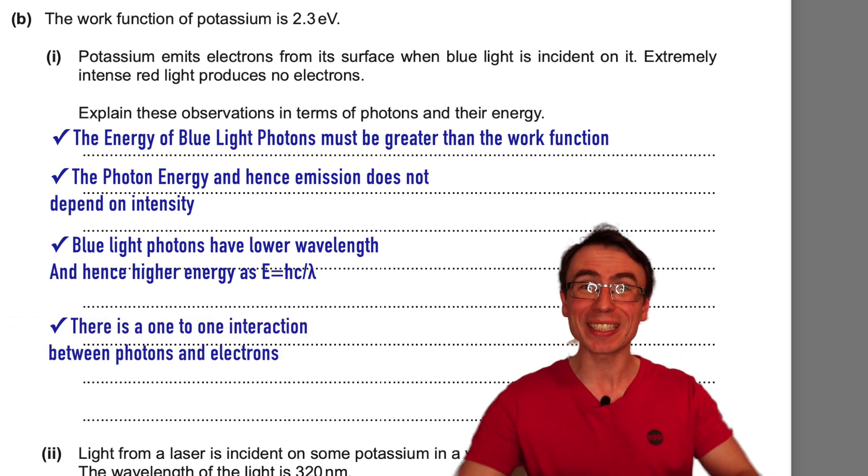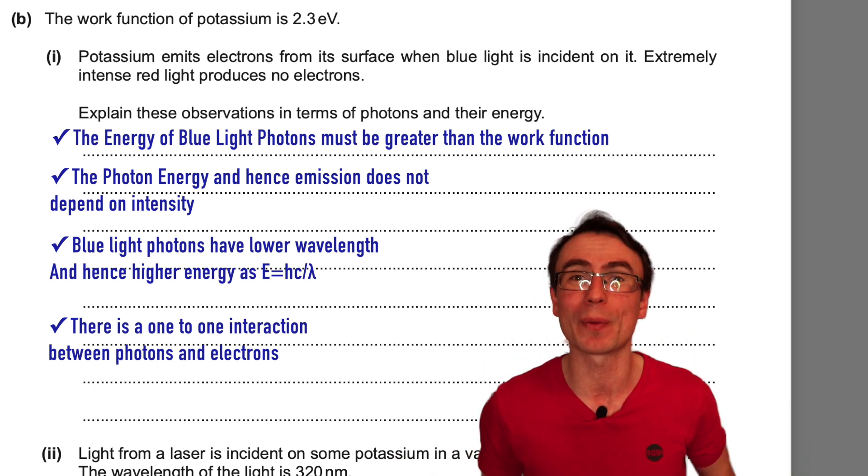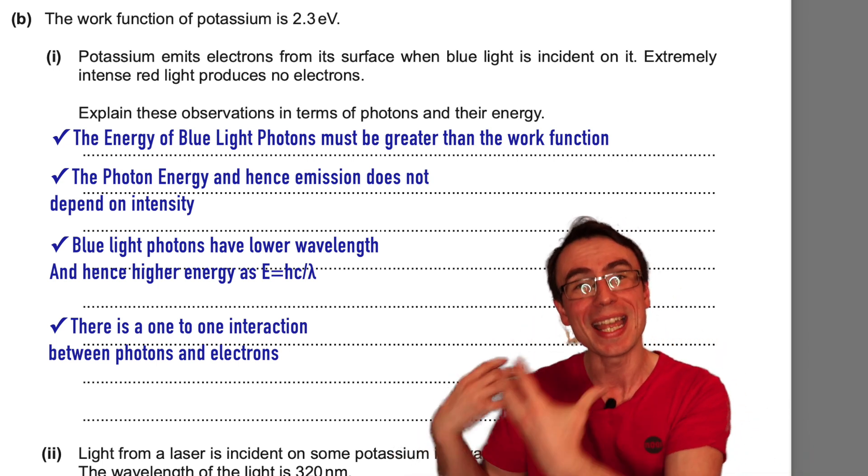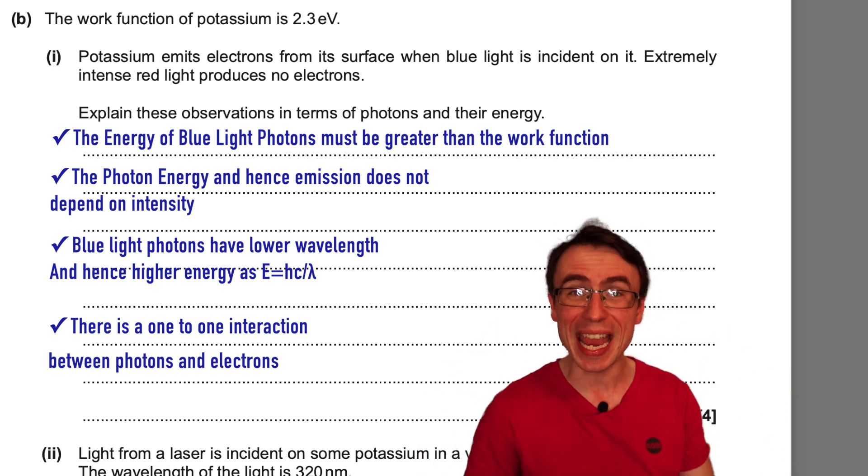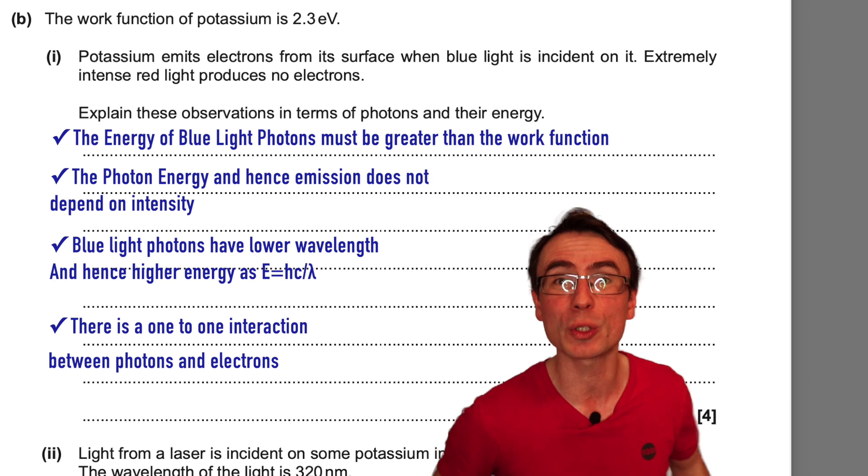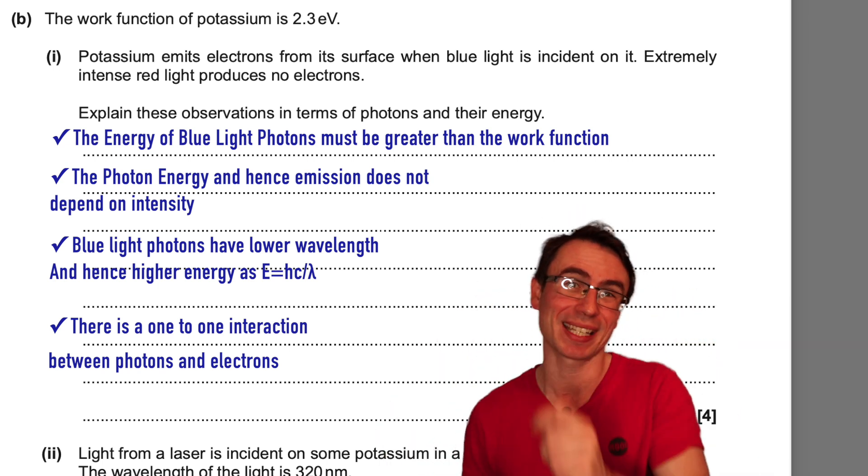And each individual photon can only interact with an individual electron. There is a one-to-one interaction. We can never have a situation when we have a billion red photons that interact with a single electron and make it escape.